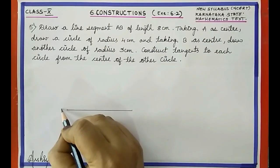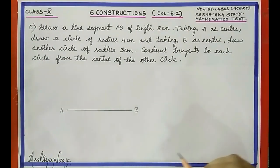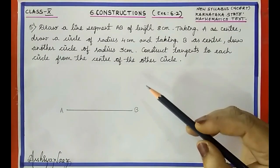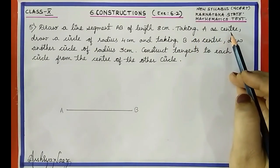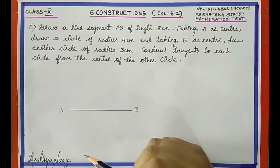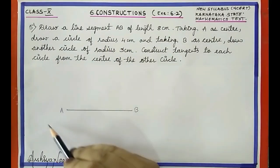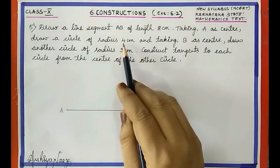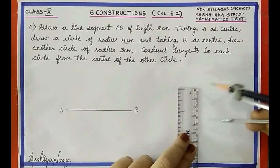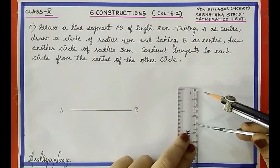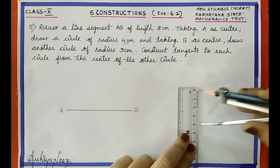Now the next step: taking A as center, draw a circle of radius 4 centimeter. Take the compass and adjust it to 4 centimeter radius carefully.